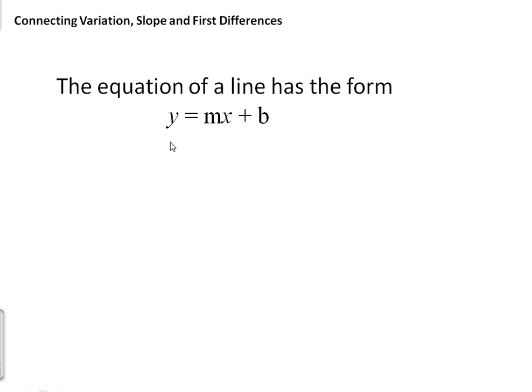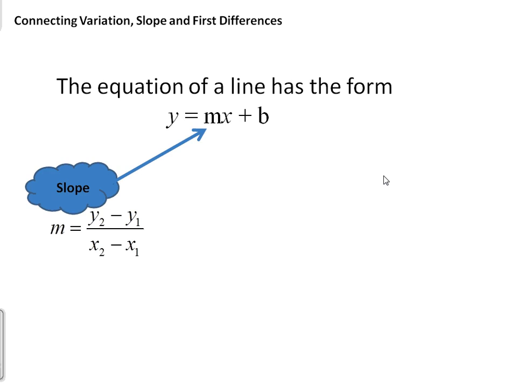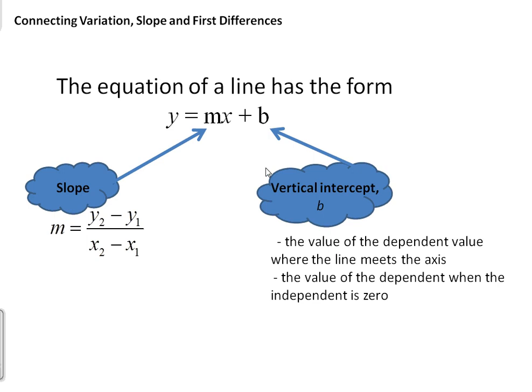The equation of the line has the form y equals mx plus b. This is the general form for any equation of the line. We know that the slope is represented by m, so we can substitute a value for slope using the formula y2 minus y1 over x2 minus x1. And b represents the vertical intercept or initial value — the value of the dependent variable where the line meets the y-axis, when the independent is zero. We can substitute values in for slope and the vertical intercept, keeping note that y is always our dependent variable and x is always our independent variable.